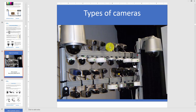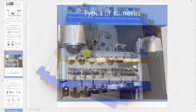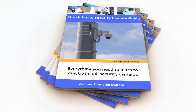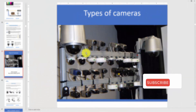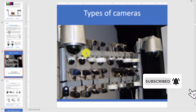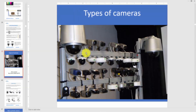Hello and welcome to this video. Klob Demir here again. Let's talk today about types of cameras. As you can see here on the screen, this is a lab with different cameras. This is the content of the Ultimate Security Camera Guide that you can find in the link in the description. So just click the link and get yours. Don't forget to subscribe to the channel and hit the thumbs up and the bell notification to receive more videos like this one.